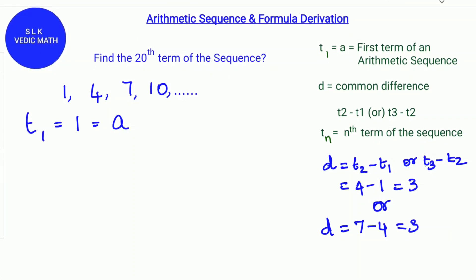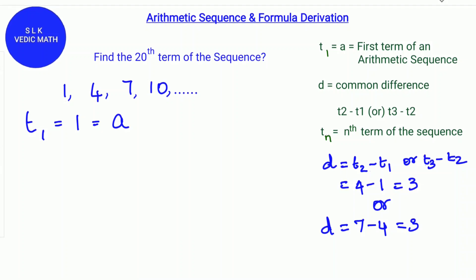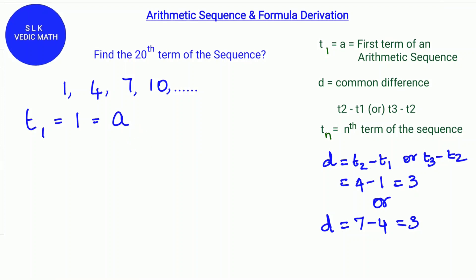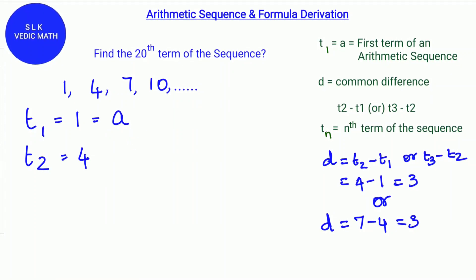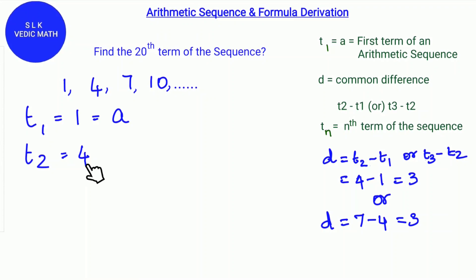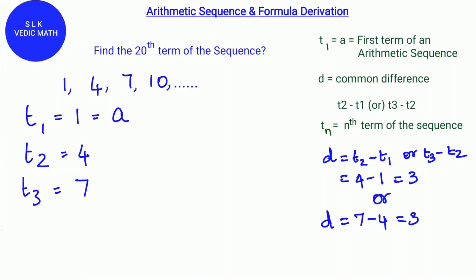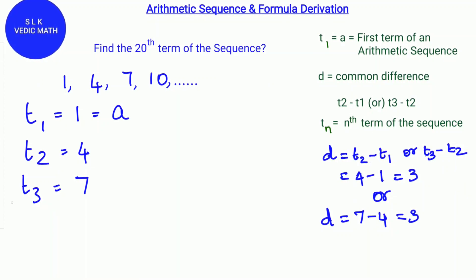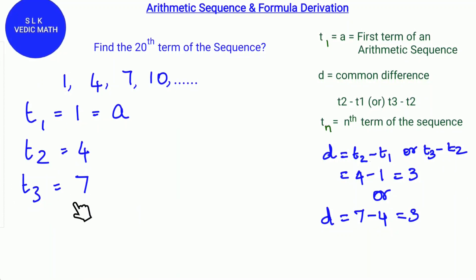Here the first term T1 is 1. Let's call it as a. T2 is the second term which is 4. T3 is the third term. Here T3 is 7.